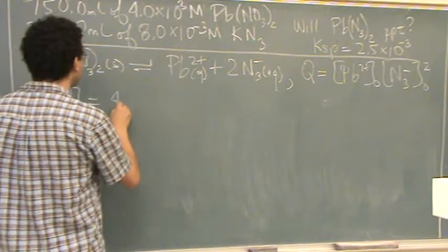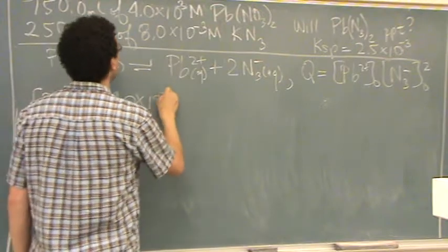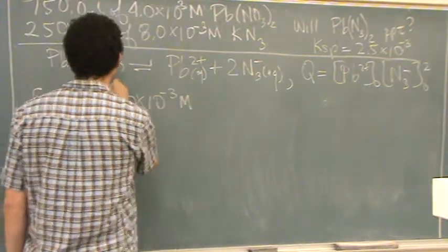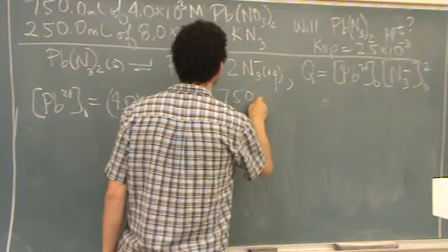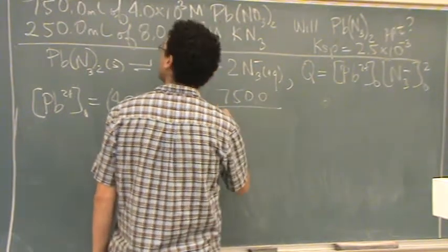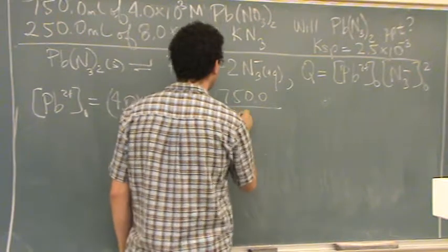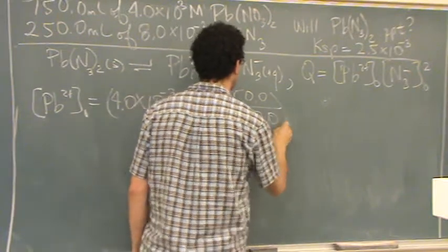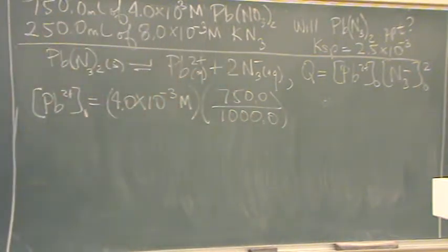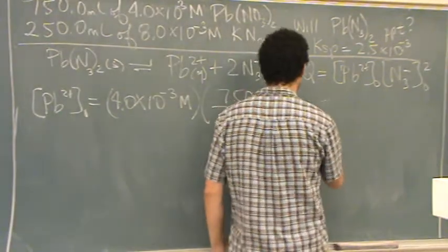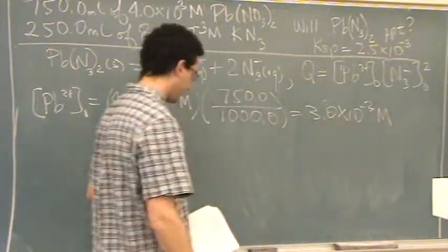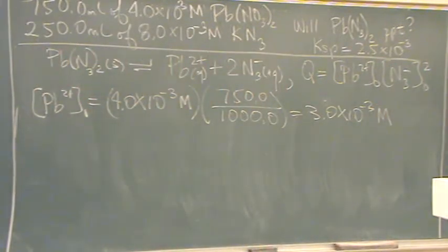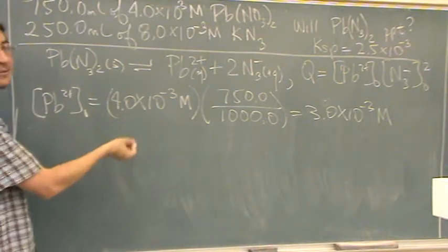So you take the initial concentration, 4.0 times 10 to the minus 3 molar. Do the volume adjustment. If you start off at 750 and you go to 750 plus 250, that's 1000. And I get 3.0 times 10 to the minus 3. There's the new molarity, or the molarity after mixing.